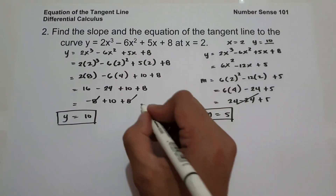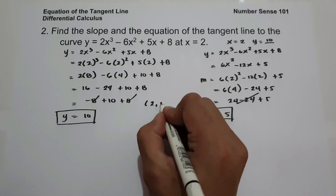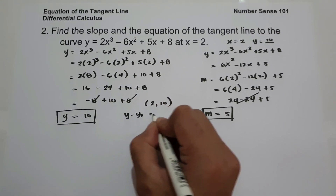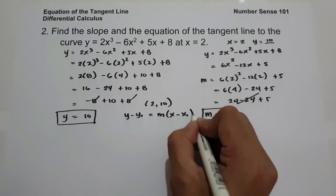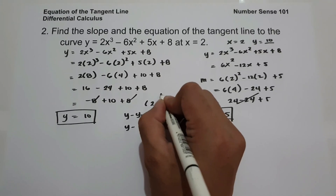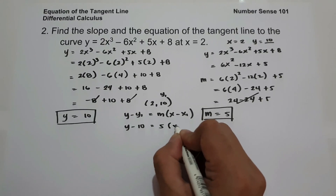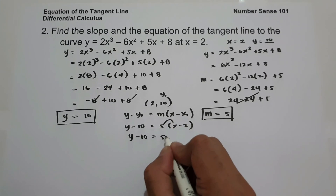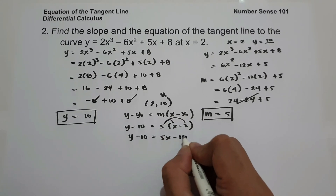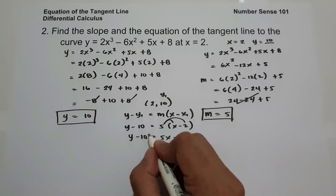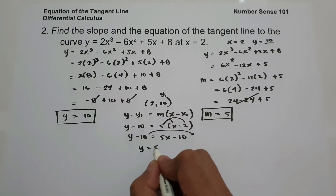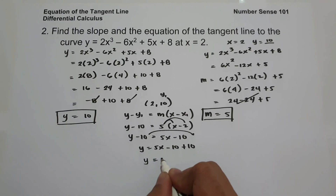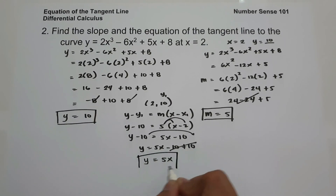To find the equation of the tangent line, with x₁ = 2, y₁ = 10, and slope = 5, use point-slope form: y minus 10 equals 5 times (x minus 2). So y minus 10 equals 5x minus 10. Moving negative 10 to the other side gives y equals 5x minus 10 plus 10, so the equation of the tangent line is y equals 5x.